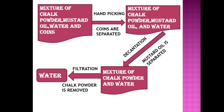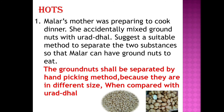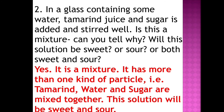Higher order thinking. First question: Muller's mother accidentally mixed ground nuts with urid dal. Suggest a suitable method to separate them so Muller can have ground nuts to eat. The ground nuts can be separated by the hand picking method because they are of different size compared to urid dal.